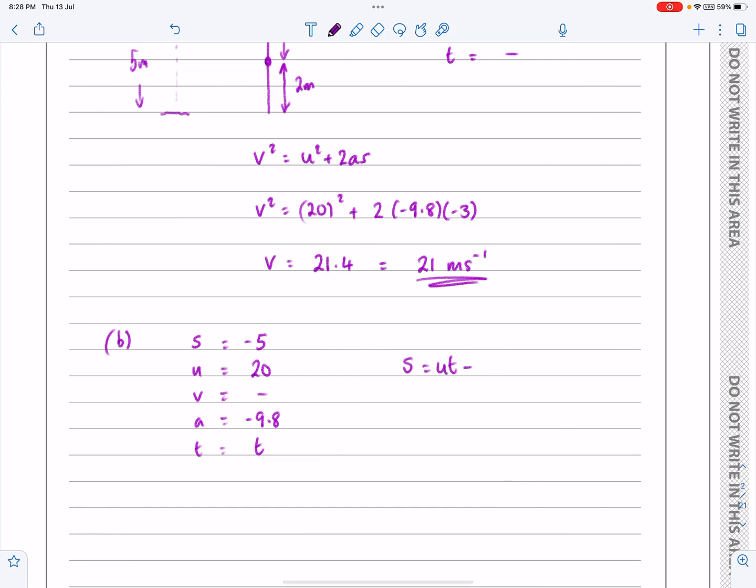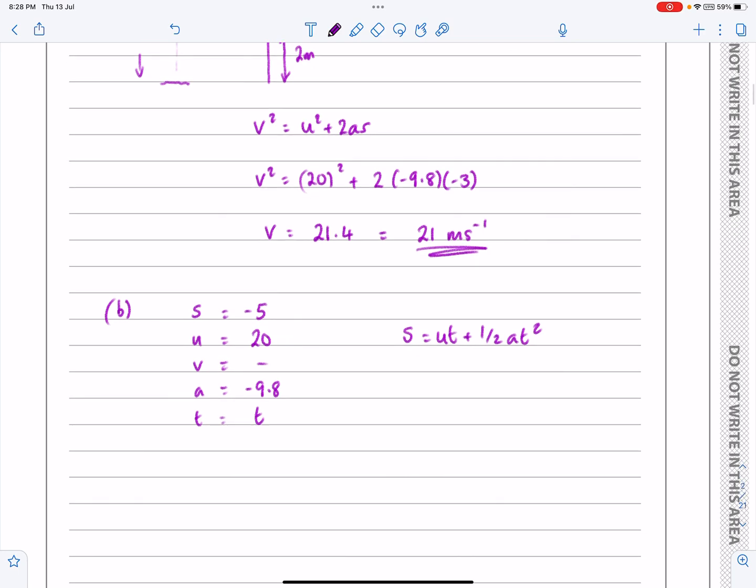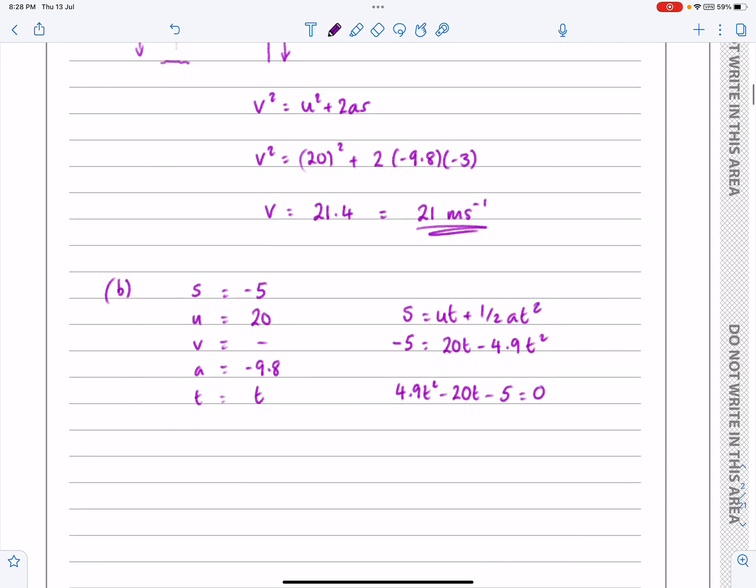S equals UT plus a half a T squared. And so what we're going to do is substitute everything in there. So we're going to get minus 5, is equal to 20T. And then it might be worth you just learning this, that half of minus 9.8 is minus 4.9. It comes up all the time when we're doing it. You can just put it in, obviously, if you need to. Right, this is going to turn into a quadratic equation. So 4.9T squared minus 20T minus 5 equals 0.